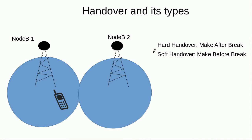The handover in 3G is soft handover, and soft handover is preferable because in that case there is no interruption of service to the mobile, as at any given time it is connected to two Node Bs.